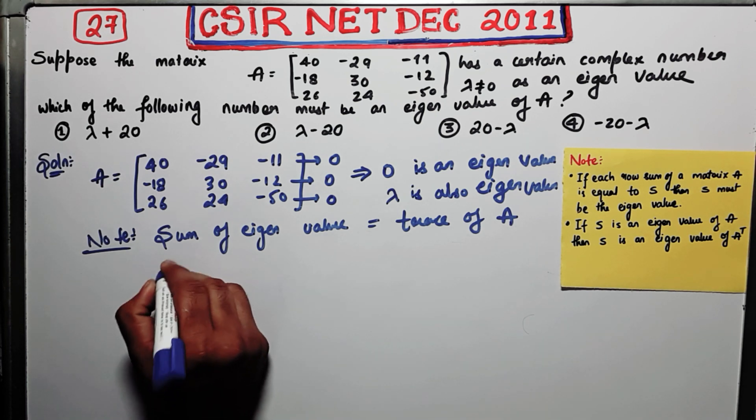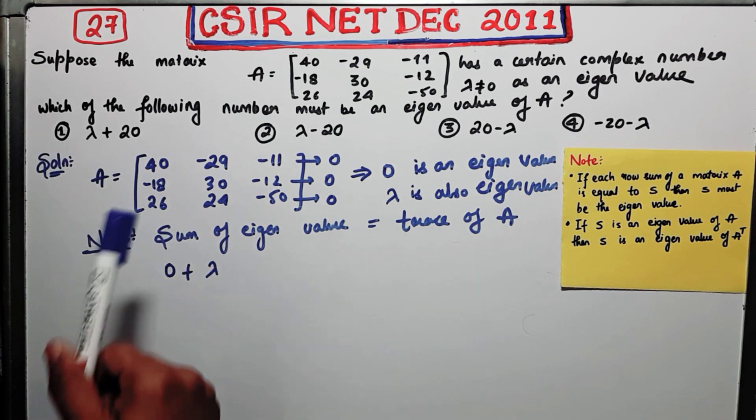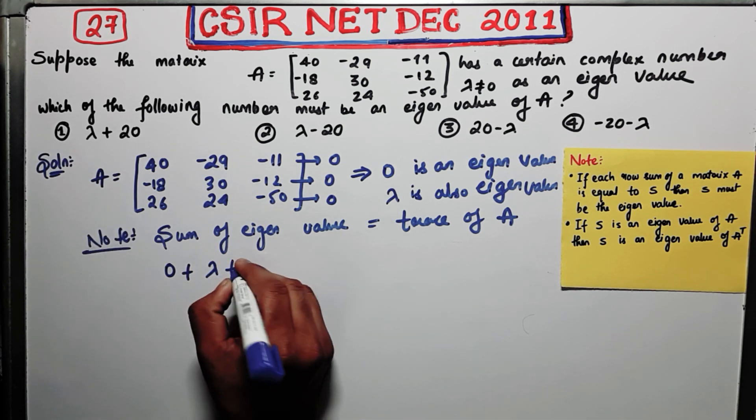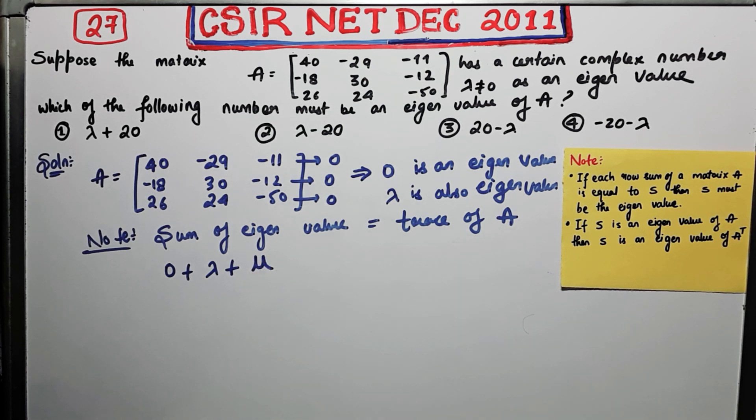So zero is your eigenvalue, lambda is your eigenvalue. Now since this is a 3 cross 3 system, I am supposing that mu, there exists an eigenvalue mu also. Now this is equal to the trace.